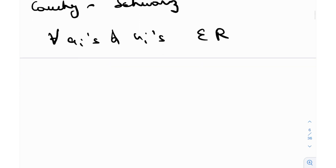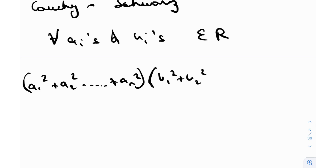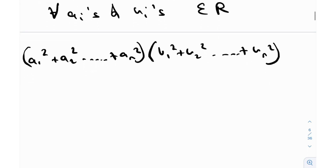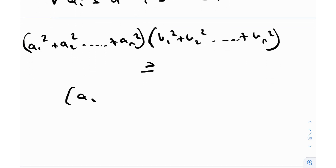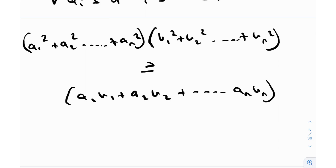The inequality states: (a₁² + a₂² + ... + aₙ²) times (b₁² + b₂² + ... + bₙ²) is greater than or equal to (a₁b₁ + a₂b₂ + ... + aₙbₙ)².